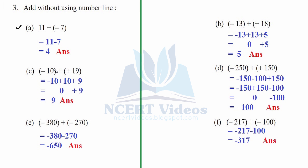Now we will do it another way using the splitting method. We have minus ten and we have to add plus nineteen. Write minus ten as it is, then split the bigger number nineteen in terms of ten: nineteen equals ten plus nine. Now minus ten plus ten gets cancelled out — it is zero — therefore plus nine remains. This is your answer.